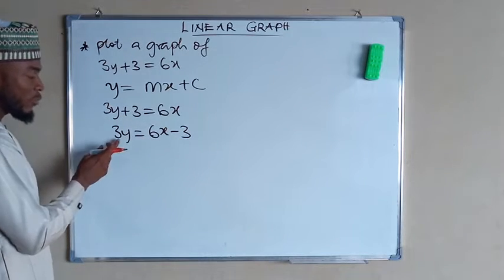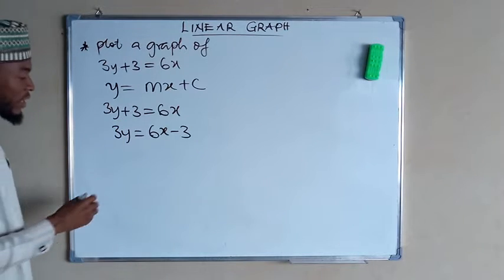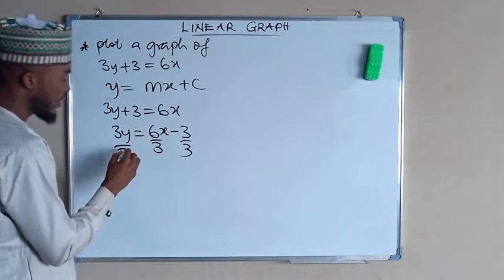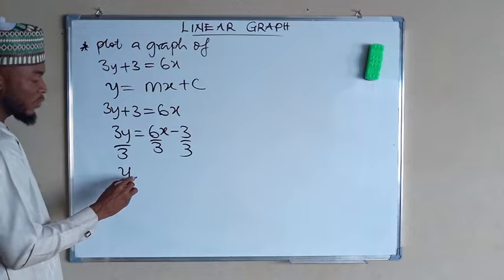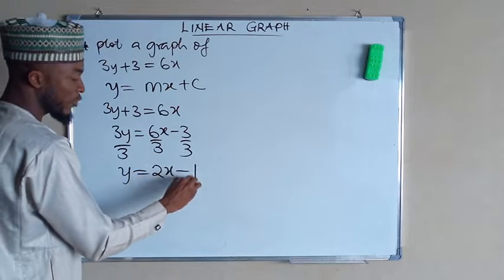Then we divide both sides by 3 since we only need y to be alone on the left-hand side. So here we have only y, and 6 divided by 3 is 2x, then minus 1.